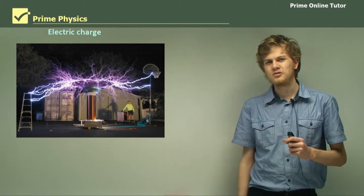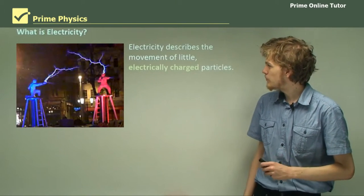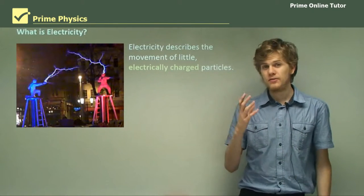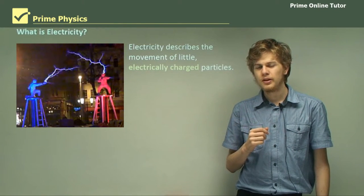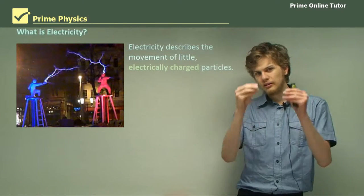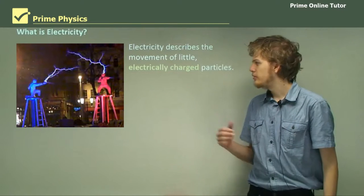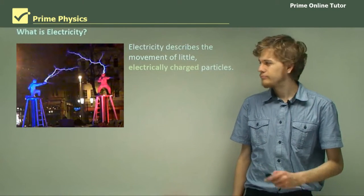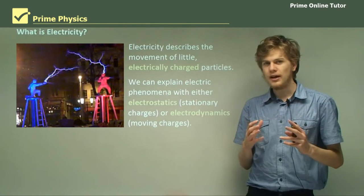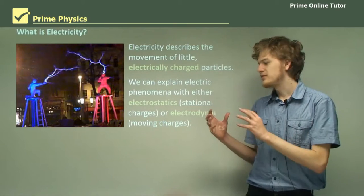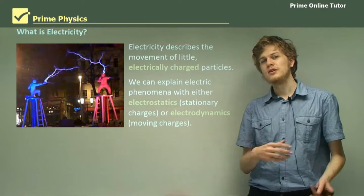Electricity can produce some rather spectacular effects. By definition, electricity describes the movement of little electrically charged particles — tiny little entities. We usually have lots of them when we look at an electric phenomenon. We can explain electric phenomena with either electrostatics, which means stationary electric charges, or electrodynamics, which means moving charges.